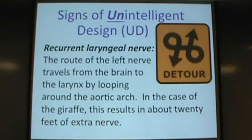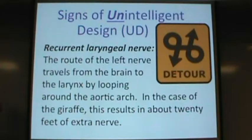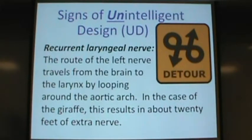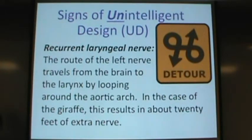There are also signs of unintelligent design, such as the recurrent laryngeal nerve, which is supposed to go from your brain to your voice box but instead loops around the heart. There's no reason for that from a design standpoint, but evolution explains it perfectly: in fish, the nerve goes directly, but as sea animals became land animals and the neck elongated, part of the nerve got trapped around the heart area. The most absurd example is in the giraffe, where the nerve makes a long trip all the way down to the heart and back, even though it only needs to go to the head and neck.